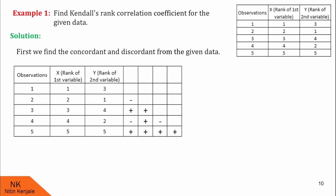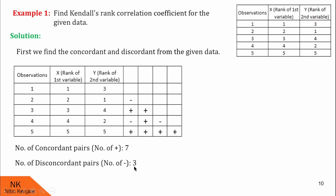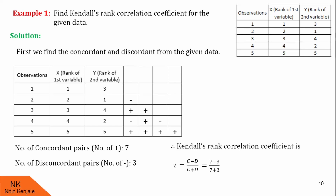Now count the number of concordant and discordant pairs. The number of concordant pairs is the same as the number of plus signs. There are 7 plus signs, so the number of concordant pairs is 7. There are 3 minus signs, so the number of discordant pairs is 3. Finally, we calculate tau using the formula (C minus D) upon (C plus D). Substituting values of C and D, we get tau equals 4 upon 10, that is 0.4, which is exactly the same as the previous answer.